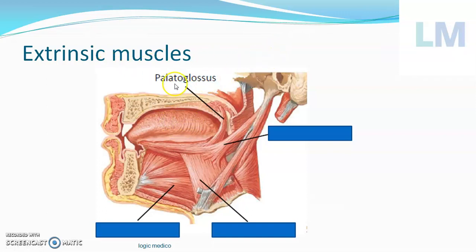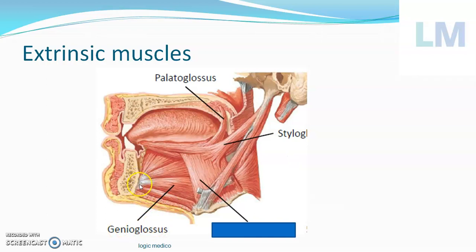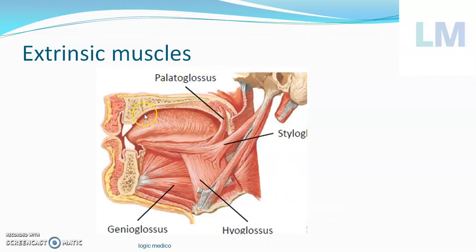The extrinsic muscles are: palatoglossus from the soft palate to the tongue, styloglossus from the styloid process to the tongue, genioglossus from the superior genial tubercle of the mandible to the tongue, and hyoglossus from the hyoid bone to the tongue. These four are the extrinsic group of muscles on one side — left side — and the same will be on the right side because the tongue has a median fibrous septum.